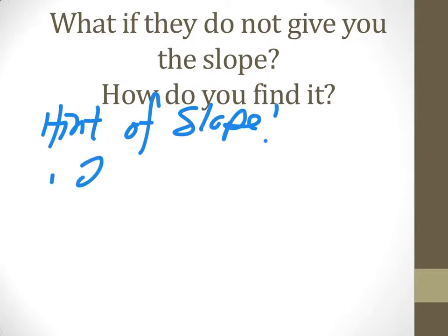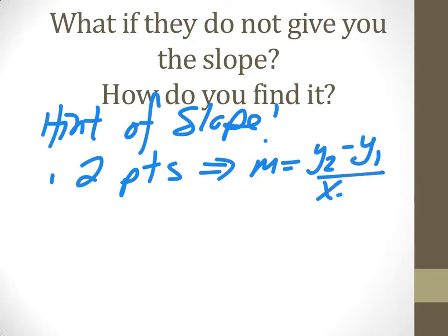First way they could give you 2 points. If they give you 2 points you're going to use the slope formula. Slope equals the difference in y's over the difference in x's, where the points are x1, y1, x2, y2. Then you use your slope formula to find those.